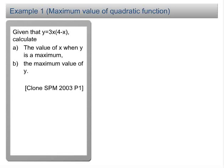Given that y equal to 3x times 4 minus x, calculate A, the value of x when y is a maximum, B, the maximum value of y.